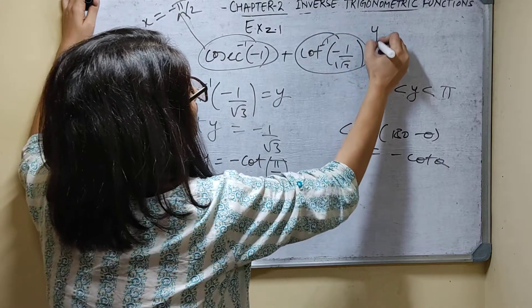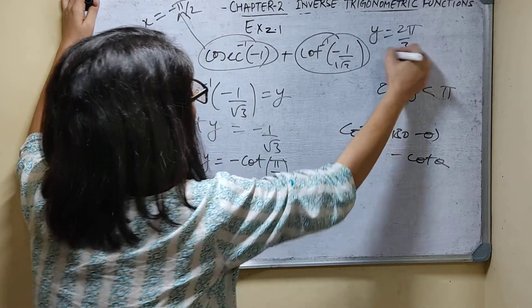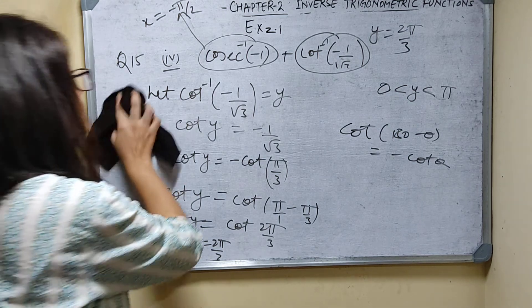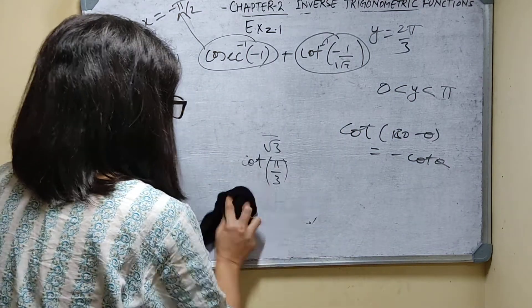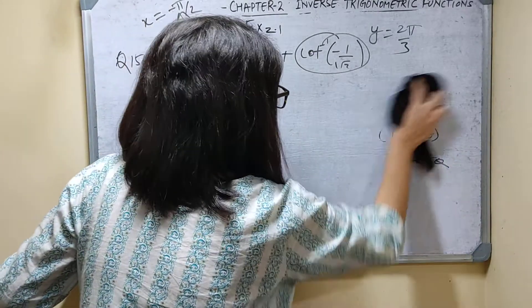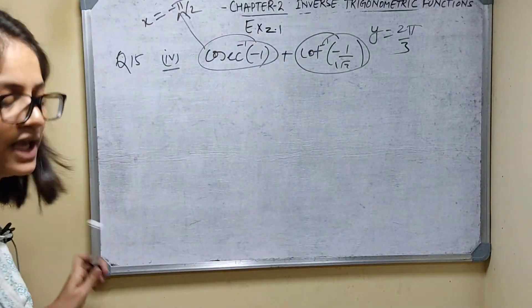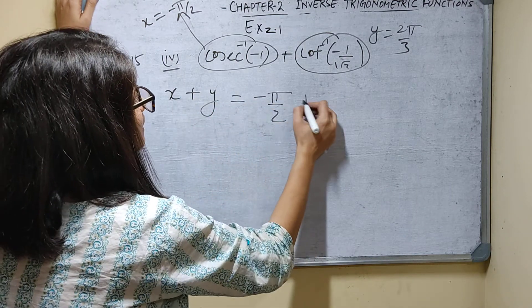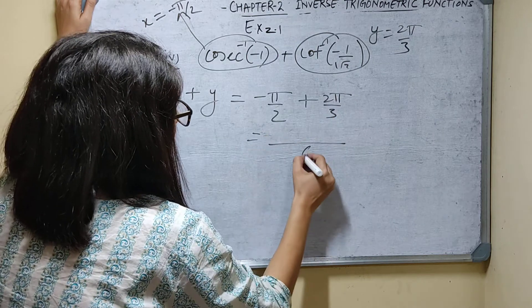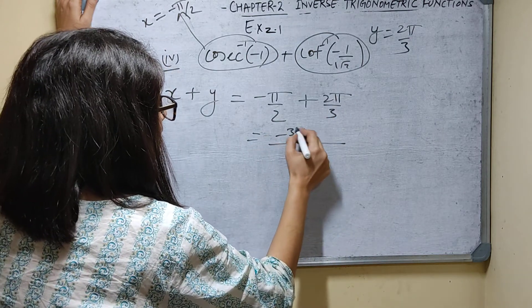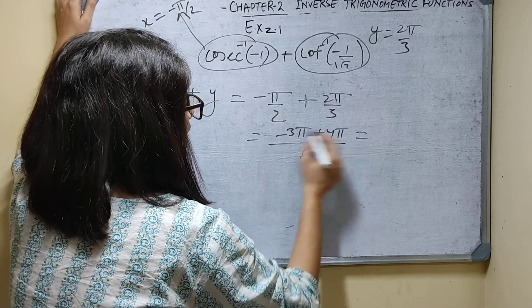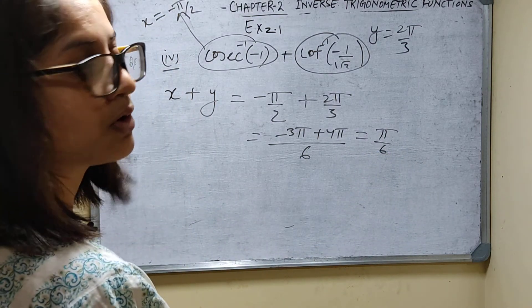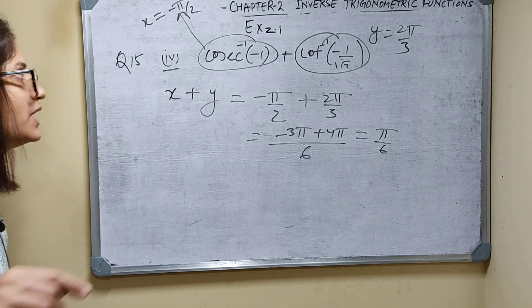Now x plus y = minus pi by 2 plus 2 pi by 3. LCM of 2 and 3 is 6, so this is (minus 3 pi plus 4 pi) by 6 = pi by 6. The answer is pi by 6. Like this you have to solve. The rest of the questions I will do in the next video. Thank you.